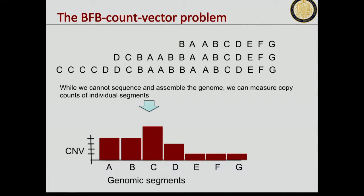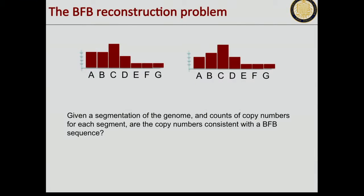The question, a very clean combinatorial question, is simply this: if you're given copy number data, is it consistent with breakage fusion? Can you start with ABCDE, the natural segmentation, and through a sequence of breakage fusion bridge cycles, can you get it?